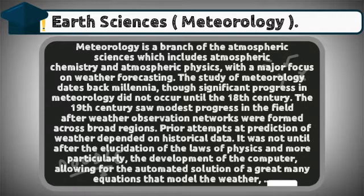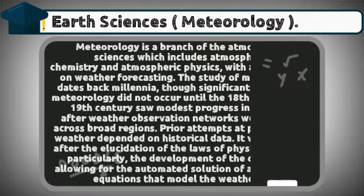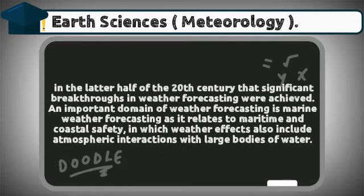The 19th century saw modest progress in the field after weather observation networks were formed across broad regions. Prior attempts at prediction of weather depended on historical data. It was not until after the elucidation of the laws of physics, and more particularly the development of the computer allowing for the automated solution of a great many equations that model the weather,